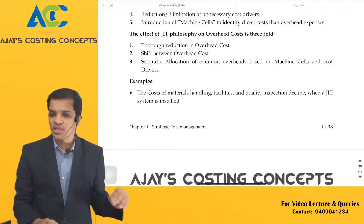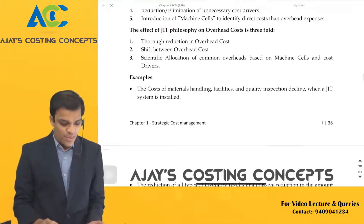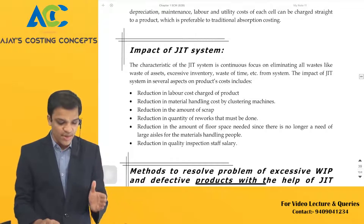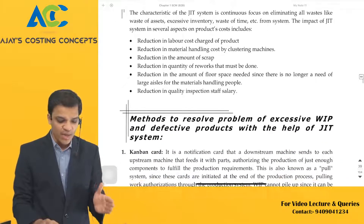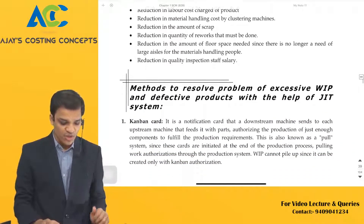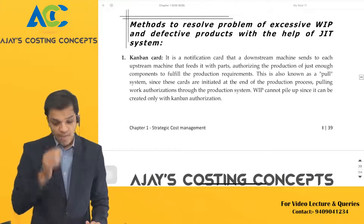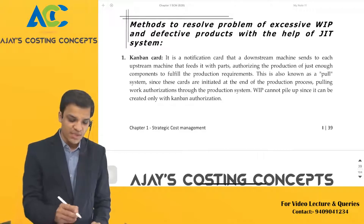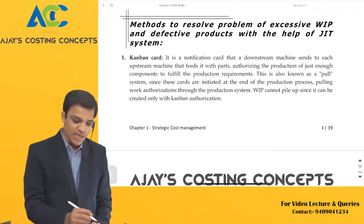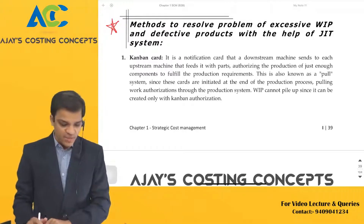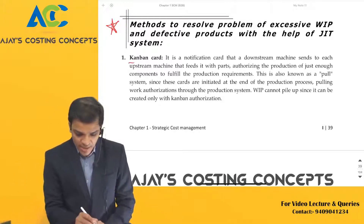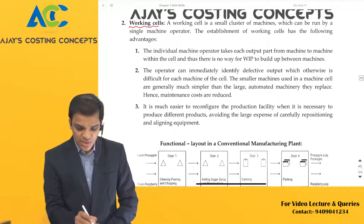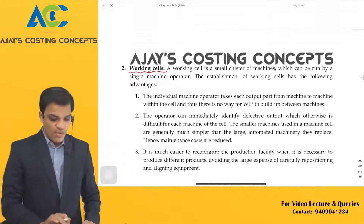The impact of just-in-time includes reduction in labor cost, material handling, scrap, rework quantity, floor space, and related costs. The two methods to resolve excessive work-in-progress and defective products using just-in-time are: number one — kanban card, and number two — working cell system, also known as machine cell system.